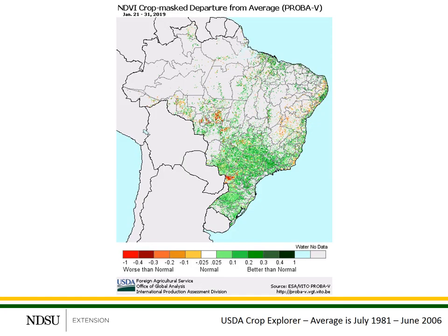This is a satellite image of the vegetative index for crops grown in Brazil. This image is for the departure from average, which means we're looking at what the crop conditions are right now — the vegetative index now — relative to a 25-year average. If you notice the scaling on the bottom, anything in green, whether it be light green to dark green, is average to above average. As you get into the beiges and browns and reds, it's below average. Now, this is for all crops grown, not just soybeans, so we have to keep that in mind.